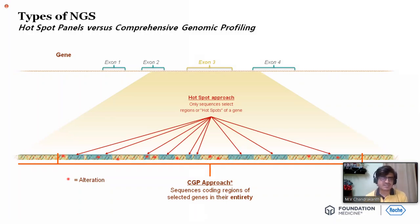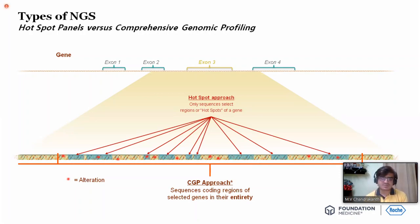This is a very basic slide and the whole concept will be based on it. We need to understand the difference between a hotspot panel versus a comprehensive genomic profile. A hotspot means I am looking into a particular alteration in a particular gene — for example, I am looking into exon 19 deletion only. I am not looking into other abnormalities of exon 19. I am looking only into a known specific mutation — that is what a hotspot is.